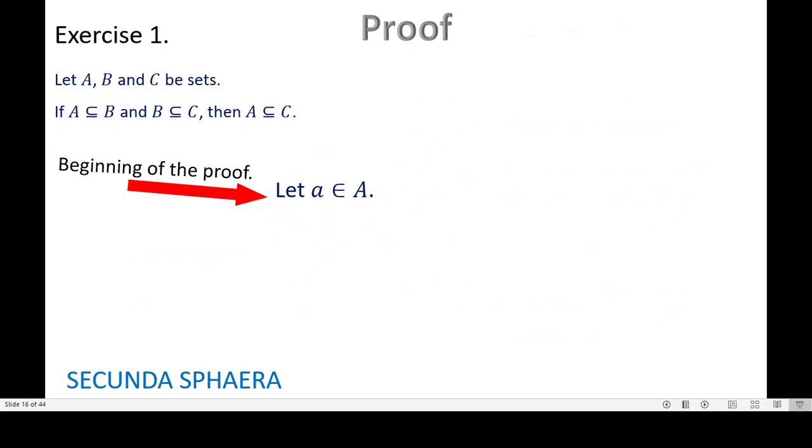So okay, let's continue. Now we can use information that we are given in the hypothesis. The first piece of information is that A is contained in B. So let's write that, and we have this now. And pretty much the direct property of containment is going to imply that a is in B.